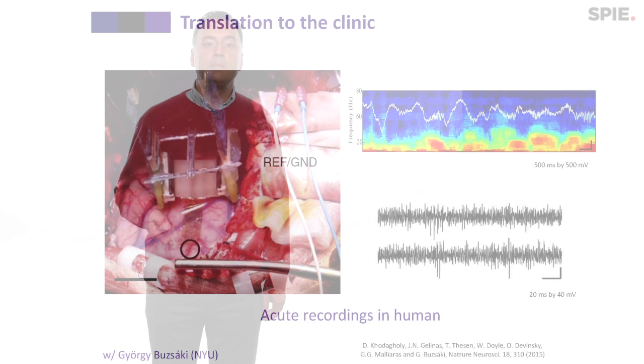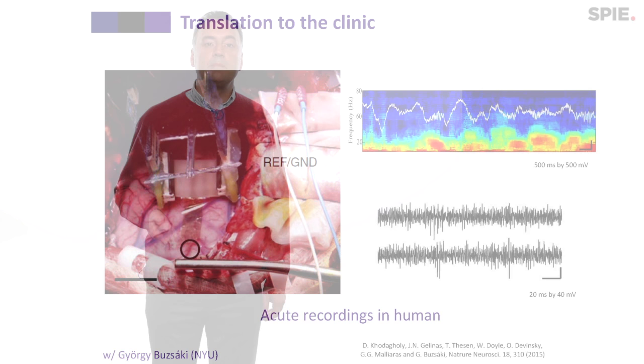Electrodes are placed on the cortex or implanted deep in the brain, and they record brain activity to localize the area where the seizure begins. That's an example of recording.